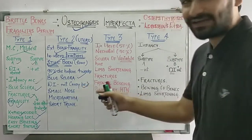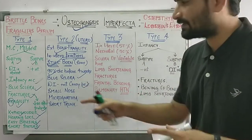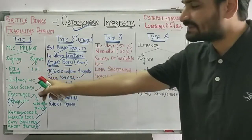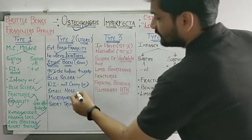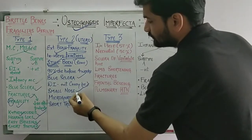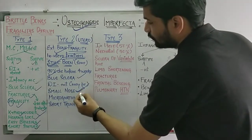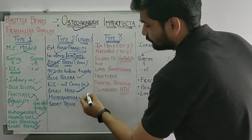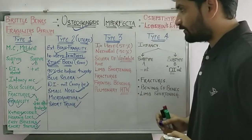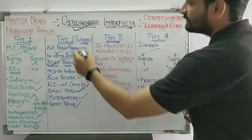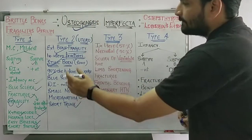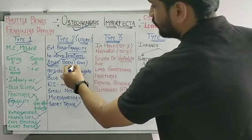Blue sclera is seen in Type 2. Dentinogenesis imperfecta is not present. The child will have a small nose, micrognathia, and short limbs. This type is mainly seen in utero, with a high number of deaths and stillbirths.